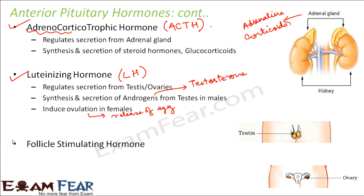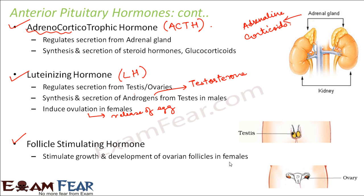Next is the follicle stimulating hormone. This hormone stimulates the growth and development of ovarian follicles in females. Inside the ovary there are many follicles, and many ova exist inside the ovary. At the onset of puberty, one of these ova matures and gets released — that is ovulation. When ovulation takes place is controlled by female sex hormones, which in turn are controlled by luteinizing hormone from the pituitary gland. The development of follicles inside the ovary is controlled by follicle stimulating hormone.